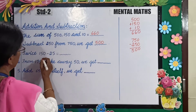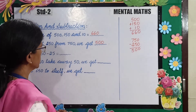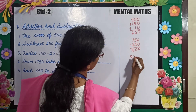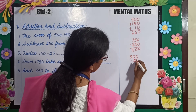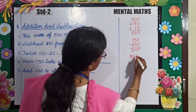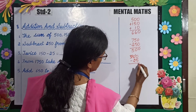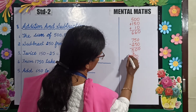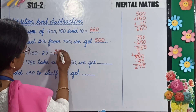Twice 150 minus 25. Twice 150 means you will add 150 two times, so 150 plus 150 is 300. And you will subtract 25 from it. You will borrow — 10 minus 5 is 5, this becomes 9, 9 minus 2 is 7, and this is 2. So your answer is 275.